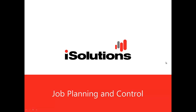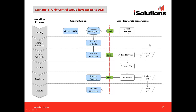Hi there. The purpose of this segment is to demo the job planning and control functionality in AMT. The context is a scenario where a central group manages equipment and outsources work to regional branches or sites — a central group managing the equipment but branches performing the work for them.